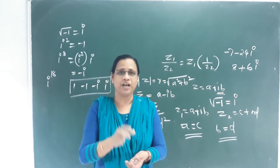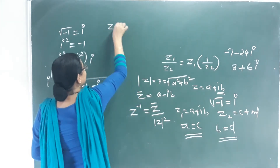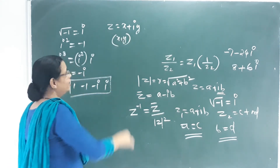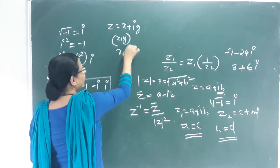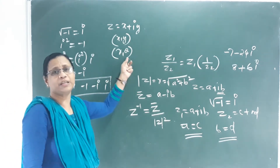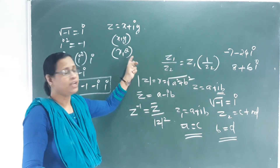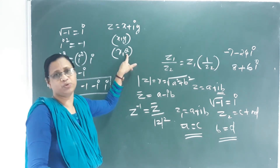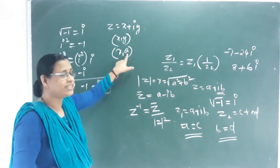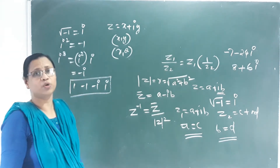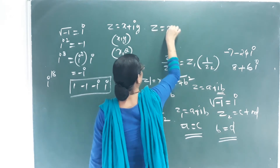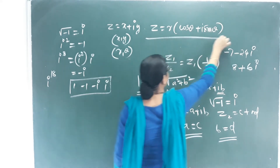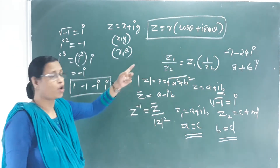Next is Polar Representation — also called the trigonometric form. A complex number can be represented using coordinates (x, y), where the modulus r is the distance from the origin and θ (theta) is the amplitude or argument. The trigonometric form is: Z = r(cos θ + i sin θ). This is the polar representation.